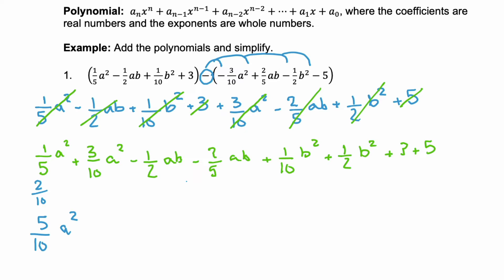For our next group, we have negative 1/2 and negative 2/5 for our ab. Again we need a common denominator, so let's change these to tenths. Negative 1/2 would be negative 5/10, and negative 2/5 would be negative 4/10. Negative 5/10 minus 4/10 — we add those — and we get negative 9/10 ab.